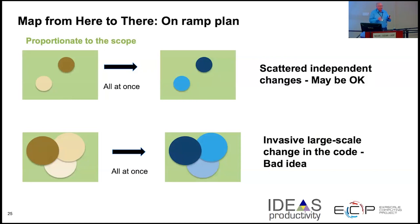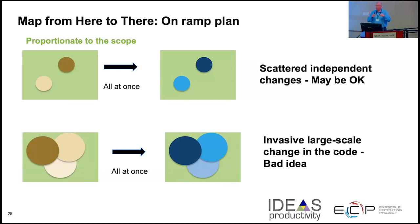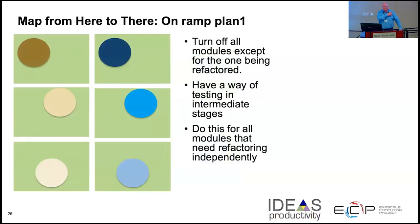There are a couple of different approaches to refactoring in complex environments. The green box represents your code at large, and the circles are modules or components you need to change. If the changes are small and scattered, it may be okay to do them all at once. But if there's a lot of connection and the changes are invasive or large-scale, doing everything at once often gets bad results — it's too much at once — so you want strategies to simplify things.